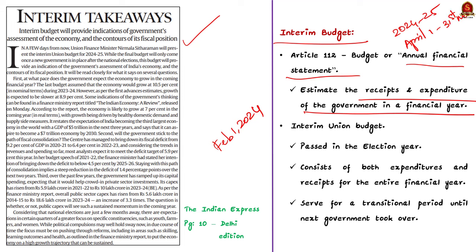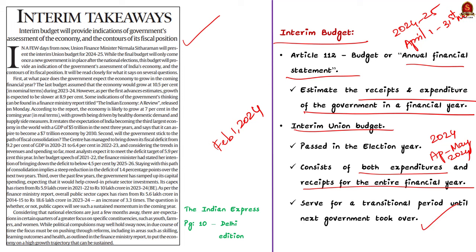This normal process cannot work for 2024 because it is an election year. General elections for Lok Sabha are expected between April and May 2024. In the lead-up to elections, it becomes impractical for any government to present a comprehensive budget, and even if they do, they may or may not form the next government. For this reason, the current government introduces an interim budget. Like the union budget, the interim budget consists of both expenditure and receipts for the entire financial year, but it aids in the transition period until the next government takes over.